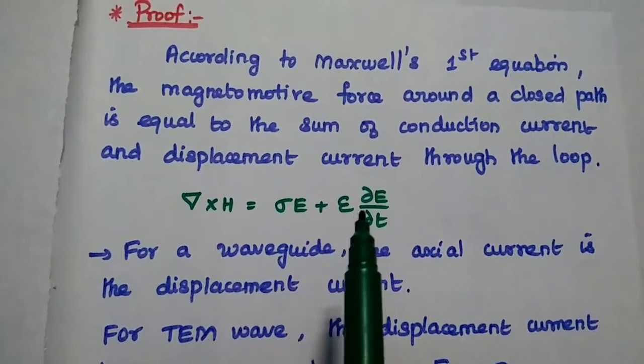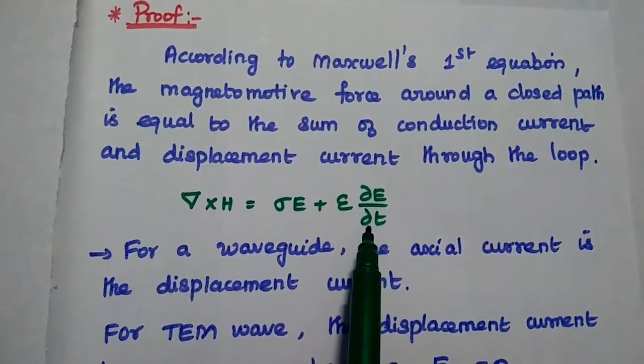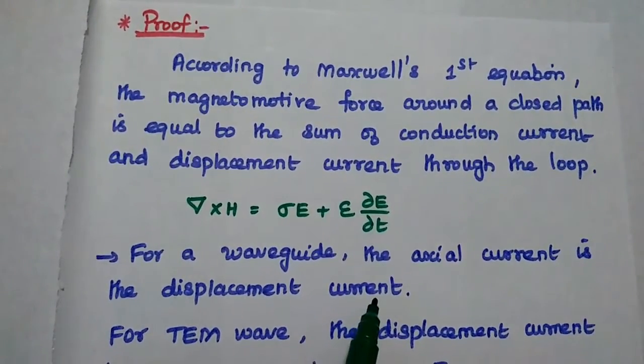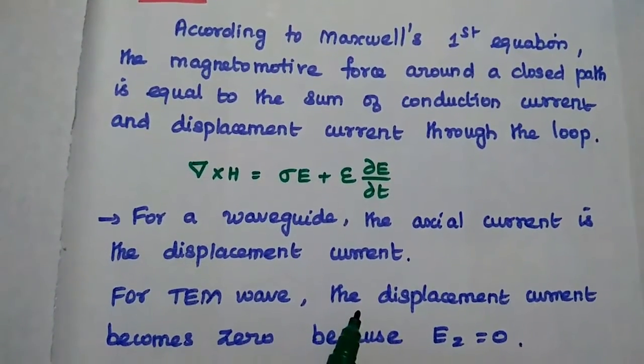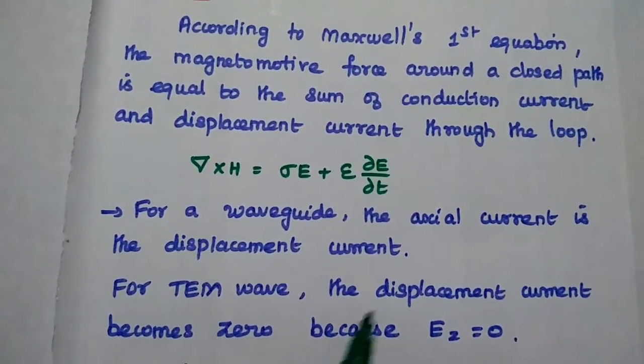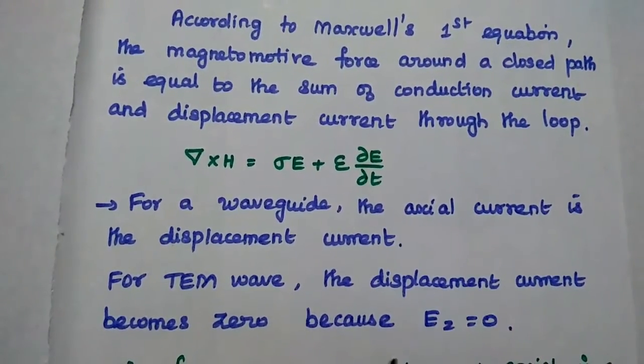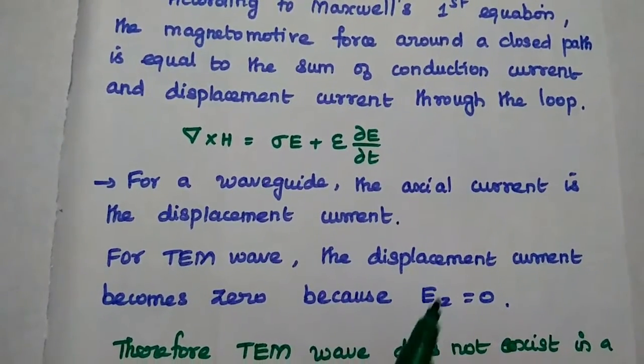For a waveguide, the axial component is the displacement current. Axial component is the displacement current means for TEM waves, the displacement current becomes zero because the displacement current depends on axial current. Here, Ez is equal to zero means there is no displacement current.